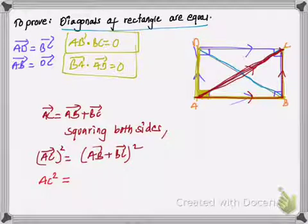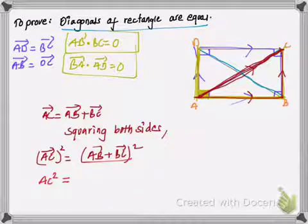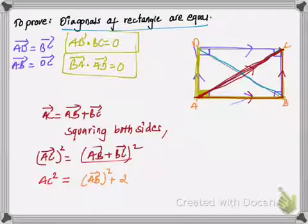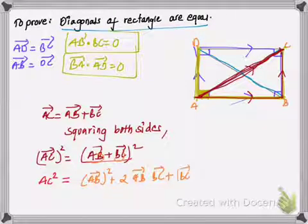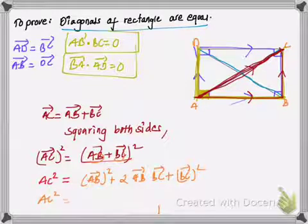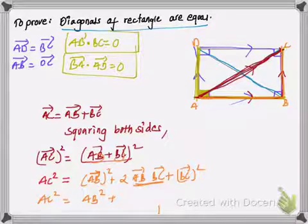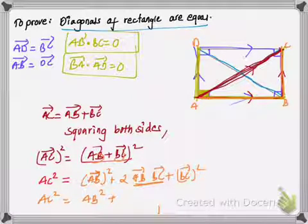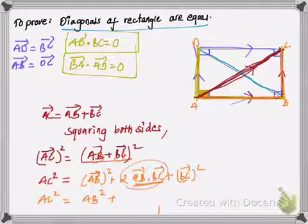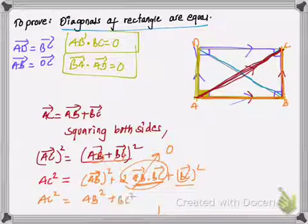The direction gets nullified when we square a vector. For AB plus BC squared, we apply the formula for (a + b)² = a² + 2ab + b². So AC² equals AB² plus twice AB dot BC plus BC². Since AB and BC are perpendicular vectors their dot product equals zero, so that middle term vanishes. We get AC² = AB² + BC². This is our first equation.